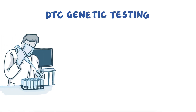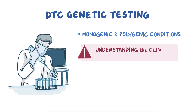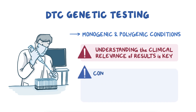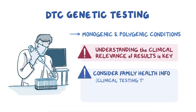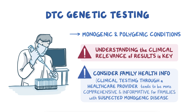DTC genetic tests can include results pertaining to both monogenic and polygenic conditions. Understanding the clinical relevance of each type of result is key because they are not equal in their implications for disease risk. It's also important to consider family health information in the context of DTC genetic testing. Although DTC tests can include important monogenic disease variants, clinical testing through a healthcare provider tends to be more comprehensive and therefore more informative for families suspected of having a monogenic disease.